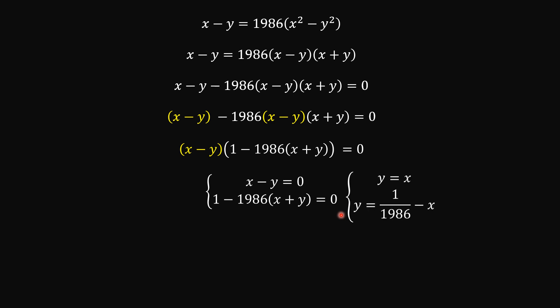From here, after making some simplifications, I'm going to isolate y. So x is equal to y, which means y is equal to x. And here, isolating y, we have this one here.